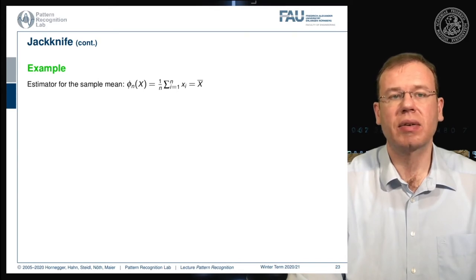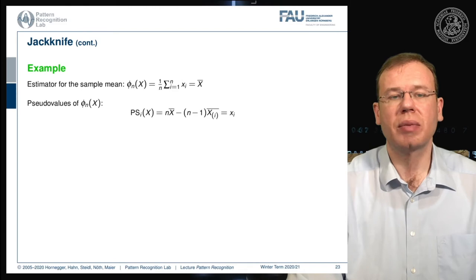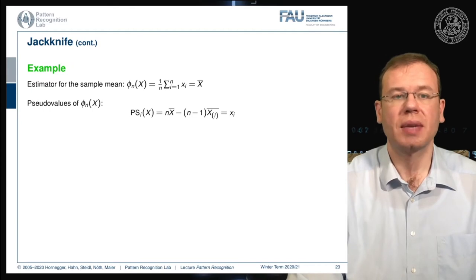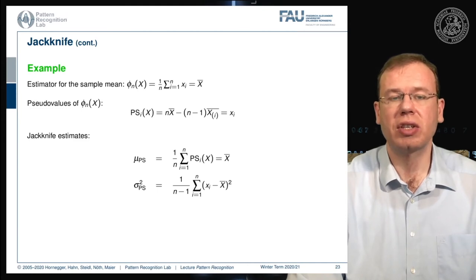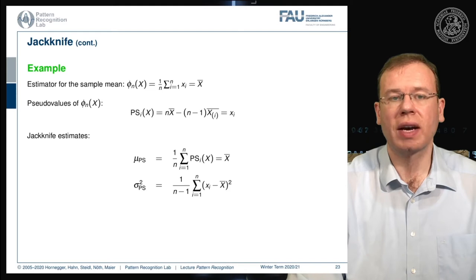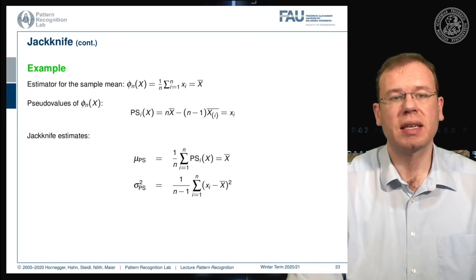Let's look at one example: the estimator for the sample mean is simply the mean value of x. The pseudo values can be determined as N times the mean value of x minus N minus 1 times the mean value where xi is missing, which equals simply xi. The jackknife estimate is then given as the mean — so the mean doesn't change in jackknifing — but the variance is not normalized with one over N but with one over N minus 1, giving a tendency to estimate a higher variance. For large sample numbers this doesn't change much.